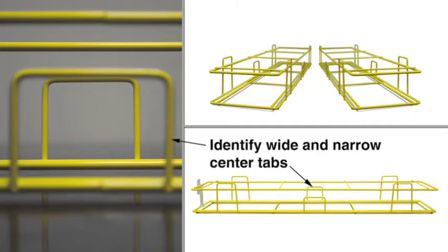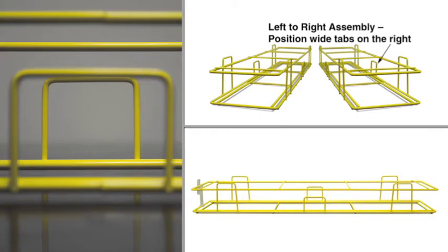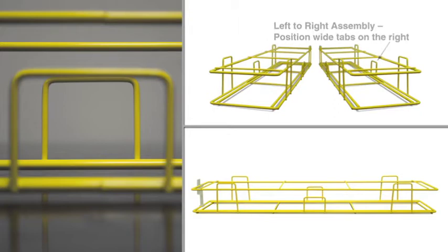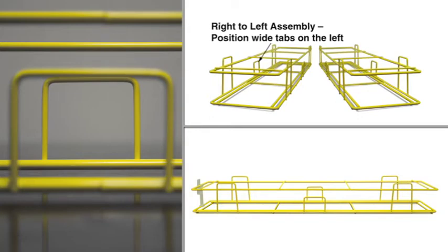Rack frames can be assembled from left to right or from right to left. Locate the center tab on either side of the rack frame. The tab on one side is wider than the tab on the other. Our demonstration will be done from left to right, so the wide tabs should be on the right-hand side. For right-to-left assembly, wider tabs should be on the left-hand side.